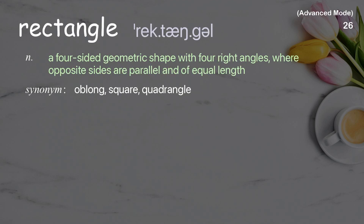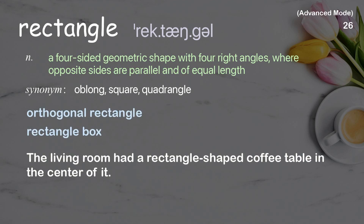Rectangle: a four-sided geometric shape with four right angles, where opposite sides are parallel and of equal length. Examples: orthogonal rectangle, rectangle box. The living room had a rectangle-shaped coffee table in the center of it.